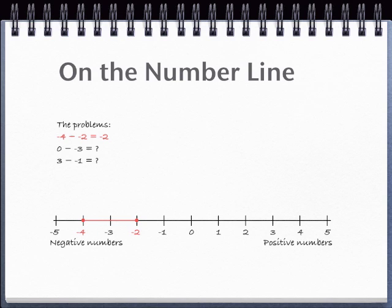The next two questions are done the same way. Let's find 0 on the number line. Now, we're going to subtract negative 3. That's the same as adding 3. To get 0 plus 3, just start at 0 and move 3 to the right. We find out that the answer to 0 minus negative 3 is 3.